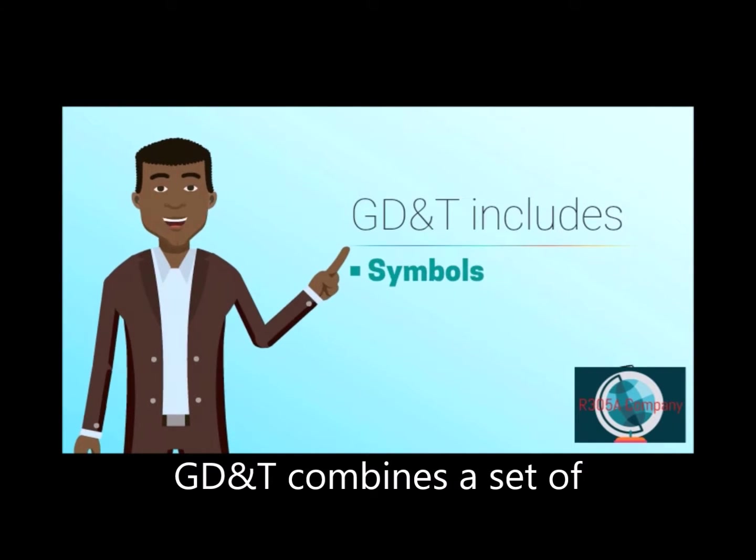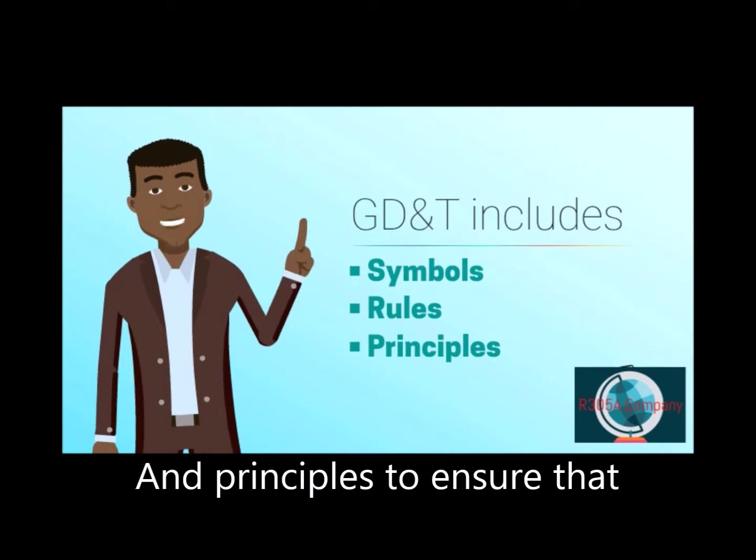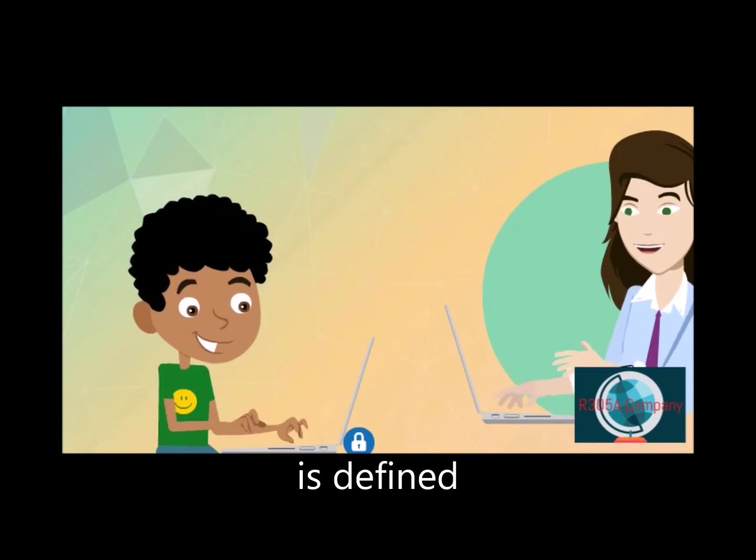GD&T combines a set of symbols, rules, and principles to ensure that everyone is on the same page regarding how a feature or part is defined.